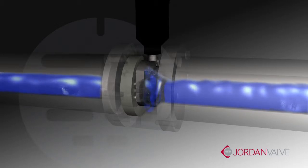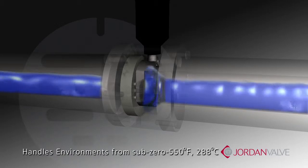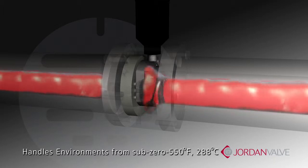And sliding gate valves can handle difficult environments with temperatures ranging from sub-zero to 550 degrees Fahrenheit or 288 degrees Celsius.